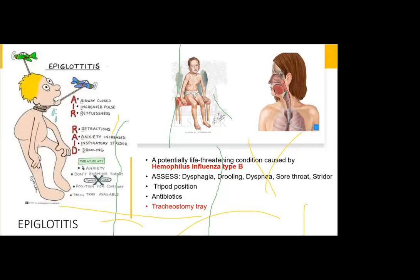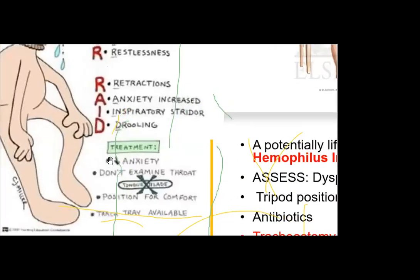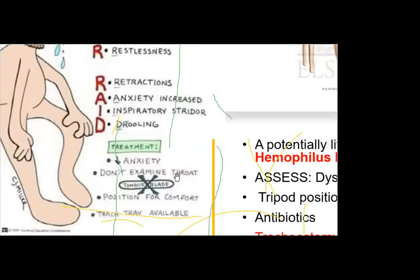Looking at the image, you can see a tongue blade with an X through it — do not examine the throat. For the NCLEX, remember: never examine the throat of a patient with suspected epiglottitis, as it can cause further inflammation, further obstruction of the airway, and respiratory failure.